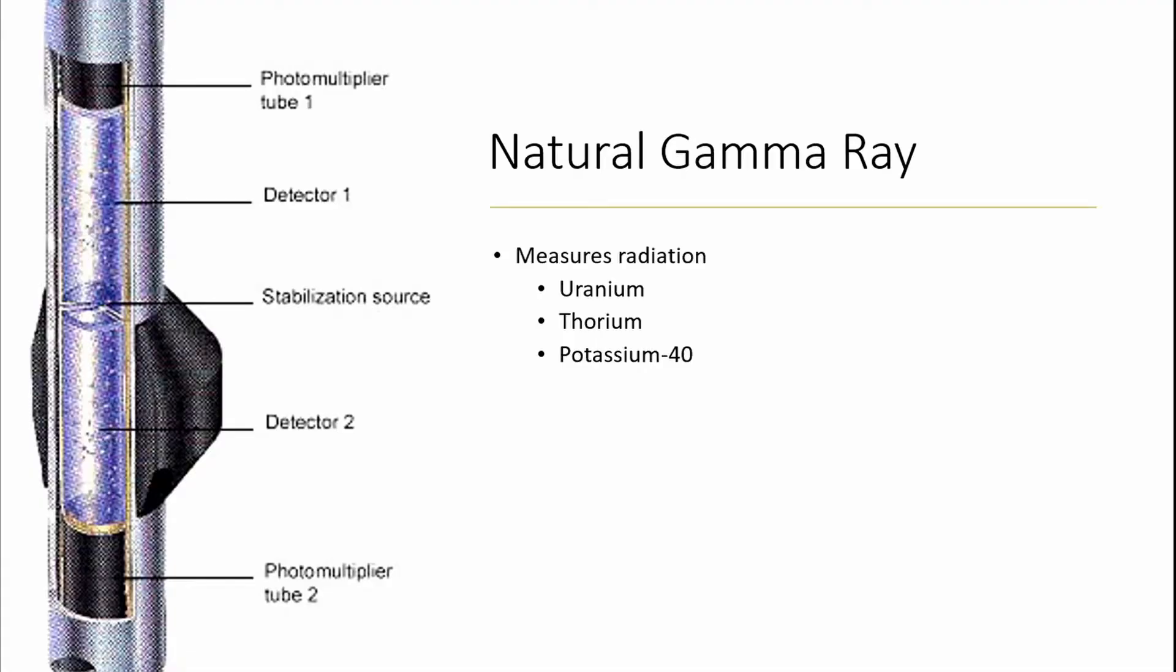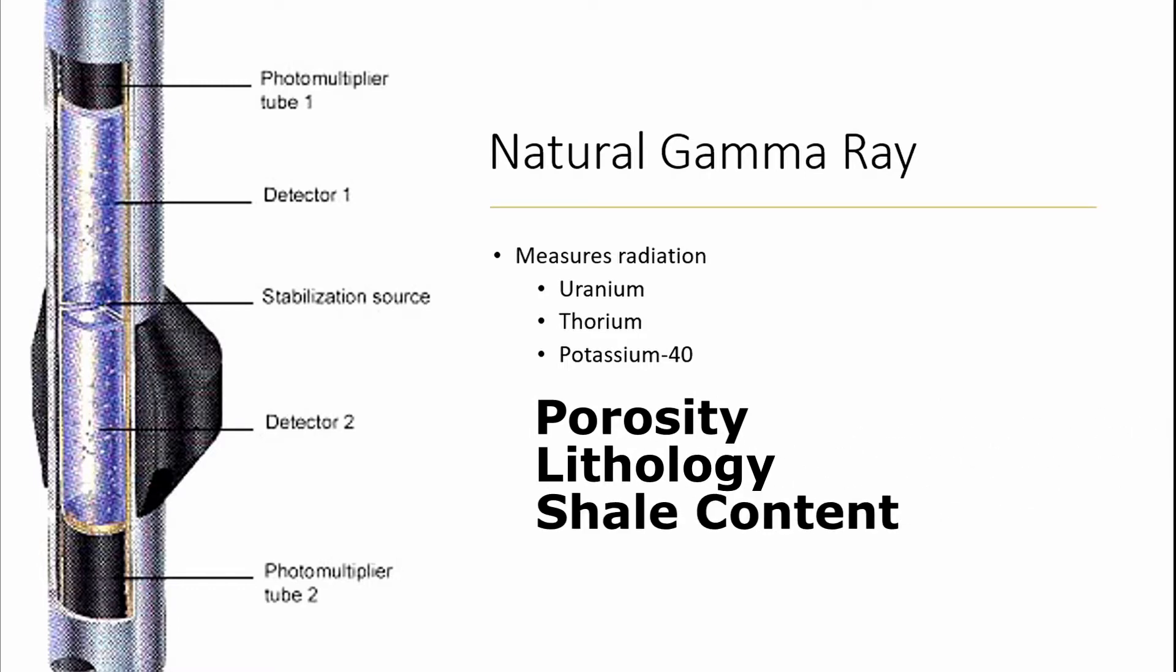Natural gamma ray instruments consist of a Geiger-Muller counter or sodium iodide scintillation crystals used to measure the radiation emitted from the decay of uranium, thorium, and potassium-40 within the formation. Natural gamma ray logs can be used to identify porosity and lithology as well as estimating shale content of the surrounding formation.